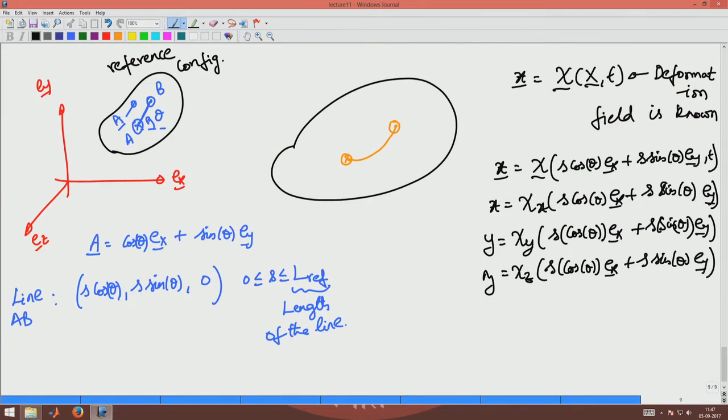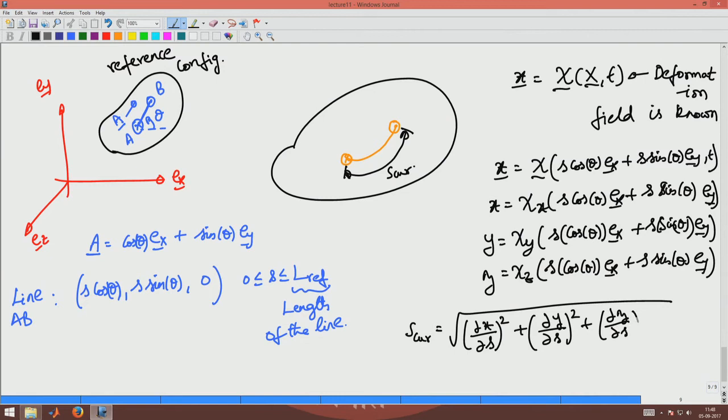Now, if I were to find the deformed arc length, if I were to find this length which will denote it by S current, S current would be the square root of (∂x/∂s)² plus (∂y/∂s)² plus (∂z/∂s)² ds integrated from 0 to L_ref.